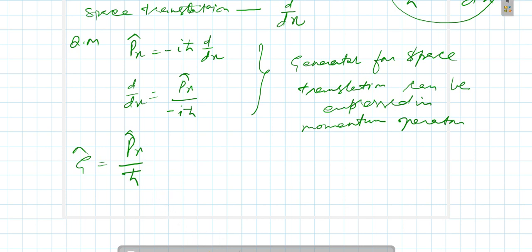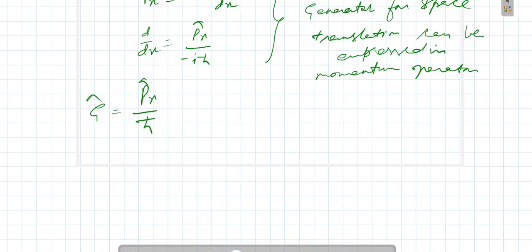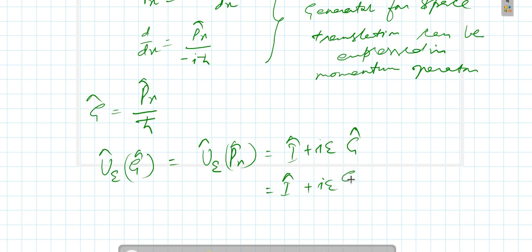Therefore, the unitary operator can be written in this form: it is I plus iota epsilon G, where G is px over ℏ. So that means it will become I plus iota epsilon px over ℏ.